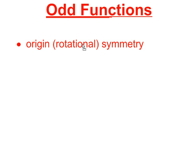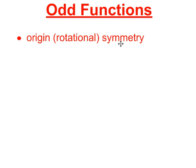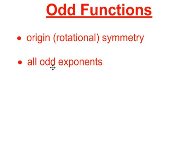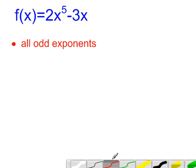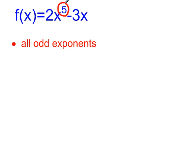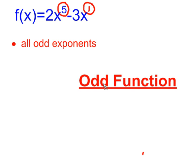Now we know that odd functions have the characteristic of rotational symmetry around the point (0, 0) at the origin, and they also have the characteristic that their equations will always have only odd exponents on the variables. Looking back at f(x) = 2x⁵ - 3x, the power on x here is 5, which is odd, and the power on the other x is 1 — since x to the 1st is just x — and 1 is also odd. So since I have only odd exponents, this is an odd function.